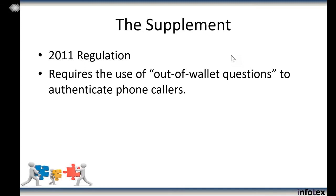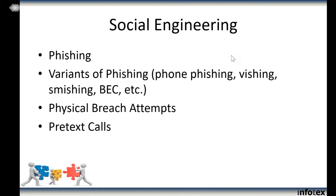Back in 2011, new guidance came out that your information security officer had to get their arms around. Part of that guidance required the use of out-of-wallet questions to authenticate phone callers. The reason: what the federal government was noticing is that pretext calling — the act of calling a financial institution and asking for information the person shouldn't be getting — was starting to rise as a valid social engineering attack vector.